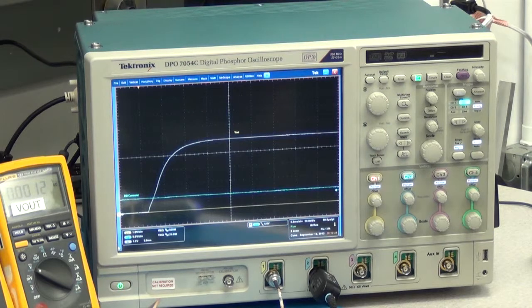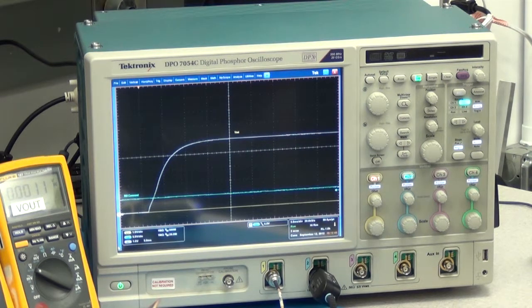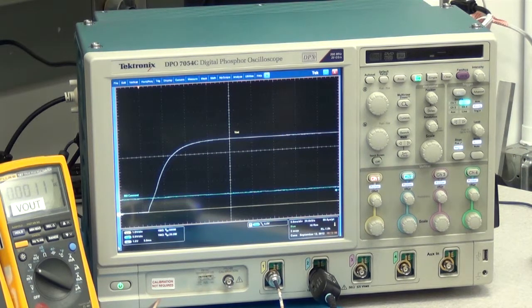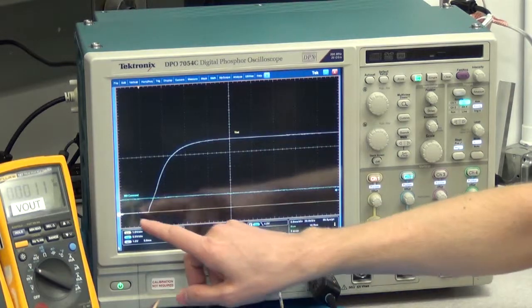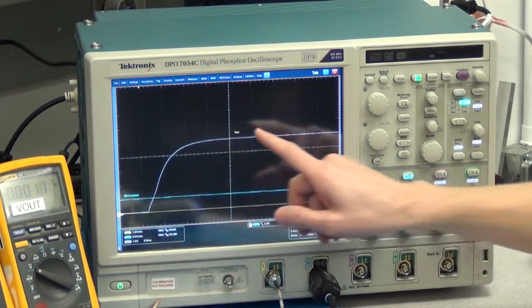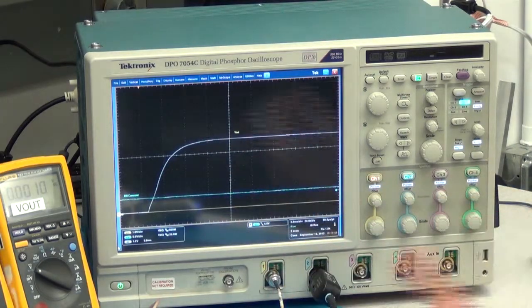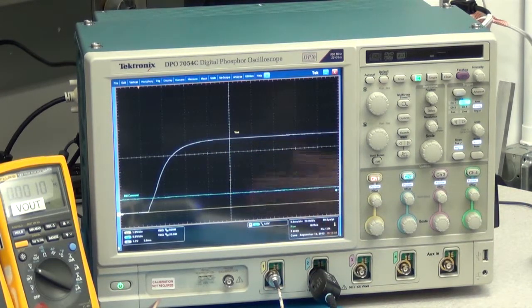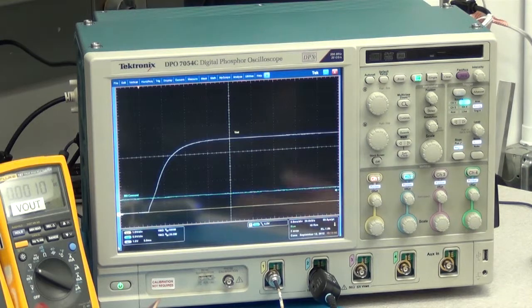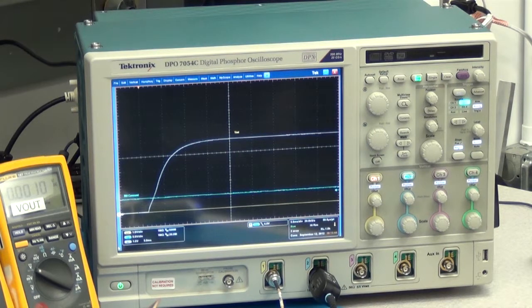Now I have added a 1uF capacitor from the inhibit pin to input common. What this does is slow down the rise of the inhibit pin when your drive circuit releases the inhibit pin, and it delays the turn on of the converter. This white reference waveform I have saved was the original turn on. Now as I release the inhibit pin, you'll see the delay caused by adding the 1uF capacitor.